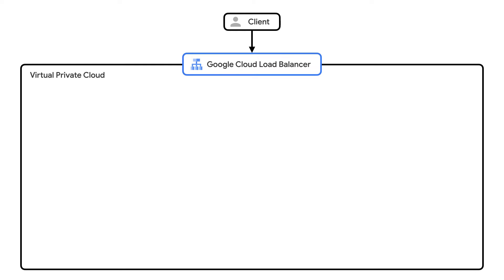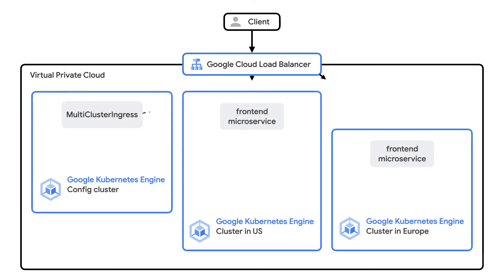A user will first access the Symbol Shops front end using a browser, which will send an HTTP request to a Google Cloud load balancer with a single anycast IP address. This is a global load balancer that exists at Google's edge points of presence, directing traffic to the appropriate destination within Google Cloud. This request is routed to one of two GKE clusters where the front end is running, configured via a Kubernetes resource called multi-cluster ingress.